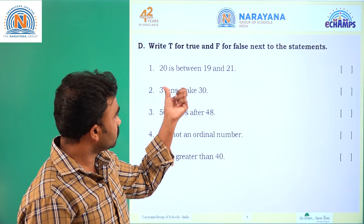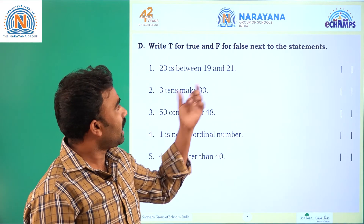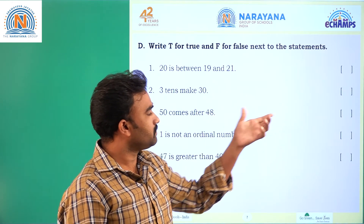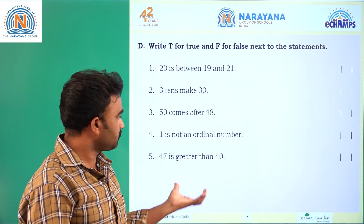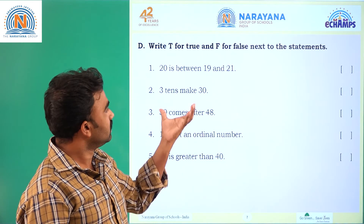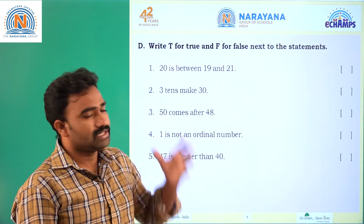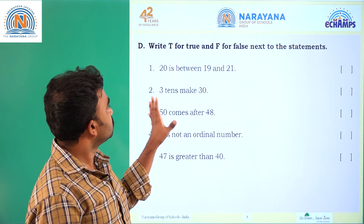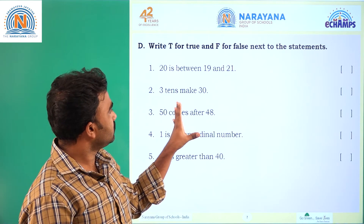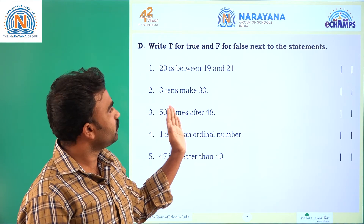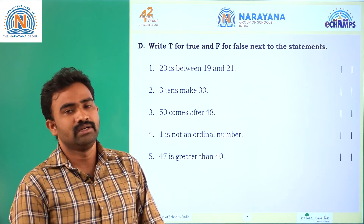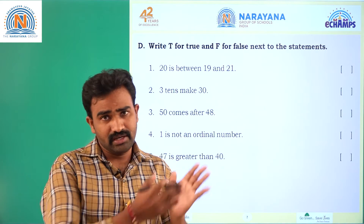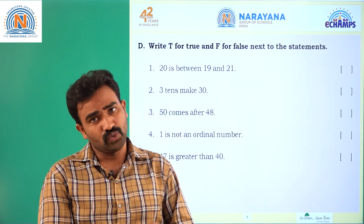Write T for true and F for false next to the statements. Statements are given — check and write true or false. First one: 20 is between 19 and 21. Yes, 20 is in between 19 and 21, so this is correct. The answer is T.